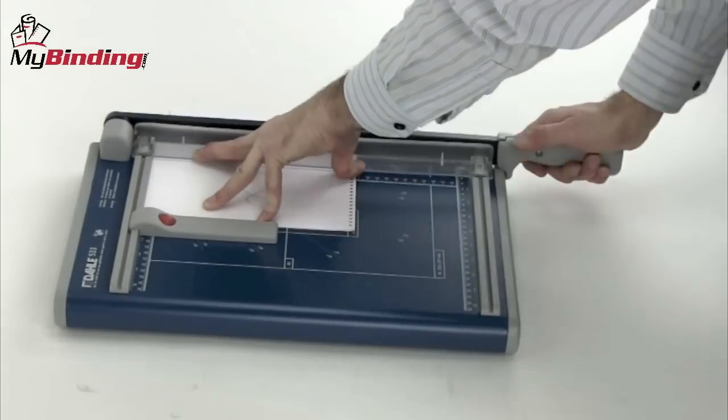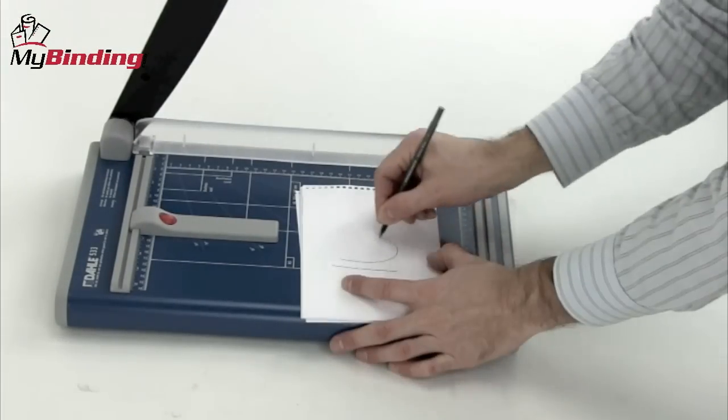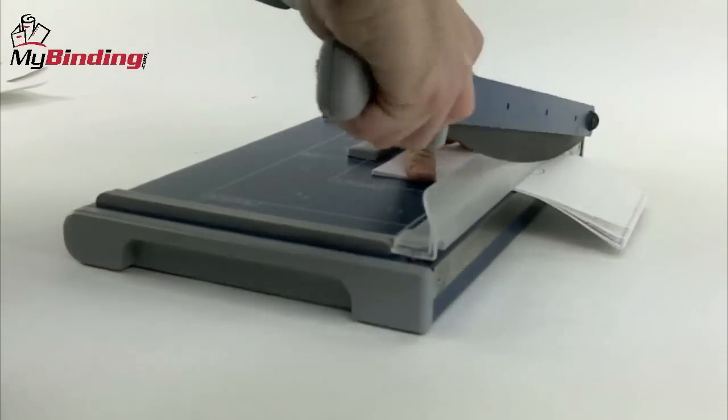The Dahle 533 can handle up to 15 sheets of 20-pound paper per trim. That was 8. Here's 16. No problem.